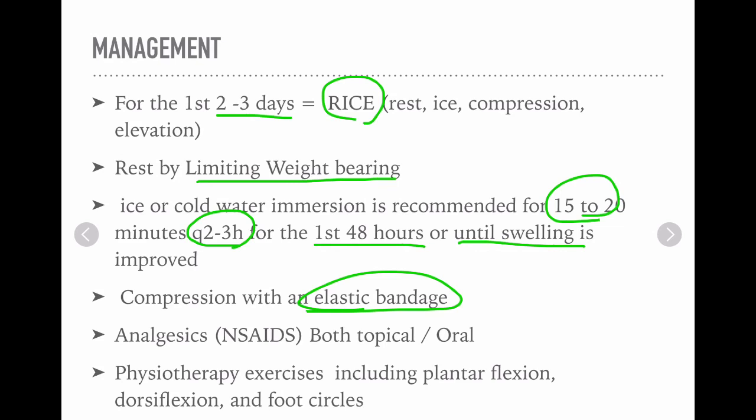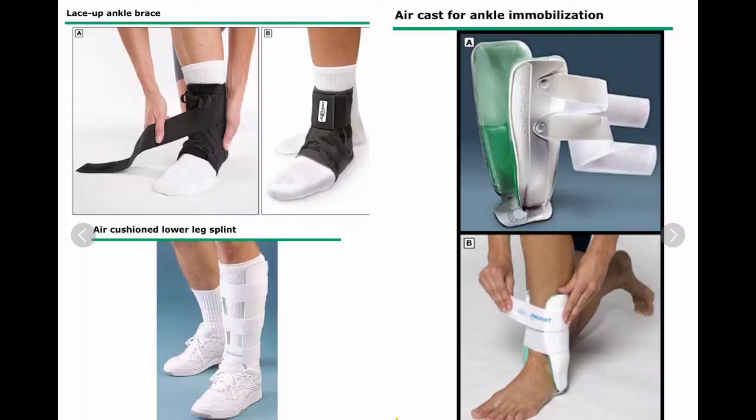Physiotherapy exercises including plantar flexion, dorsiflexion, and foot circles are recommended. For immobilization in case of Grade 3 ankle sprain, a lace-up ankle brace, air cast, or air cushion lower leg splint may be used.